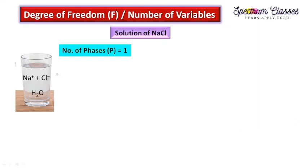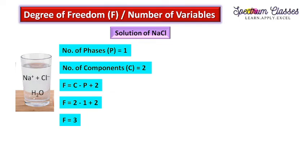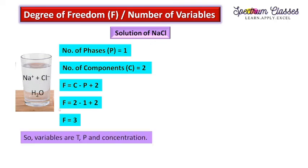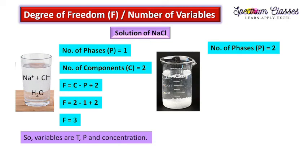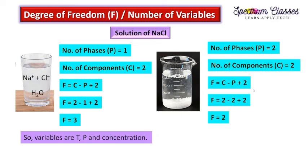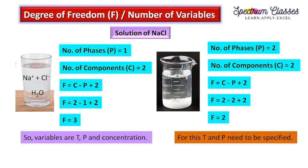For a solution of NaCl, there is 1 phase and 2 components — H₂O and NaCl. Applying F equals C minus P plus 2 gives F equals 2 minus 1 plus 2, which equals 3. So we need to specify temperature, pressure, and concentration. For a saturated solution of NaCl, there are 2 phases and 2 components, giving a degree of freedom of 2 — meaning only temperature and pressure need to be specified.